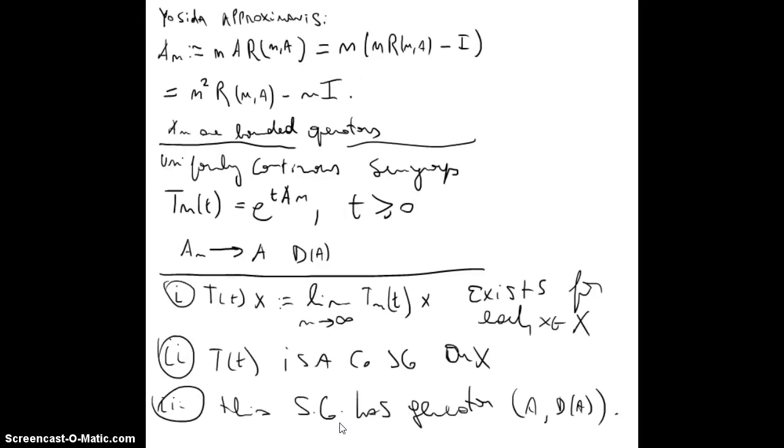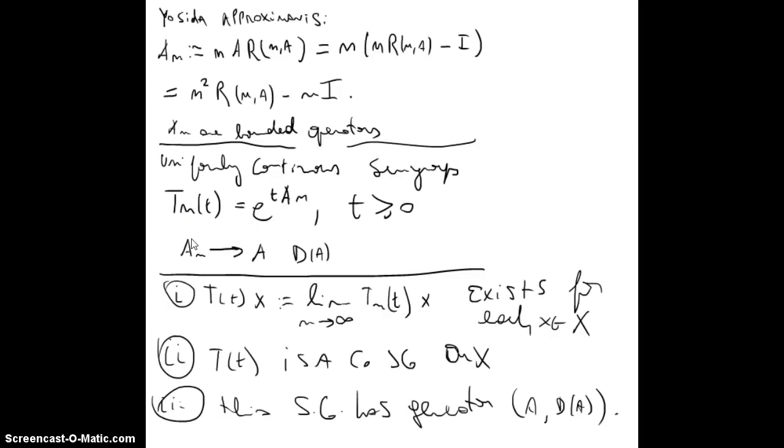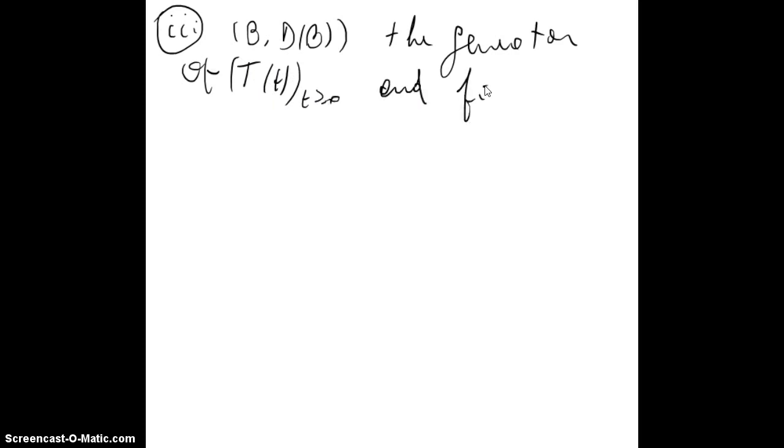The third one is that the semigroup has the generator A, DA. That is to say that is the same, the generator of T_n and the one of T. Not the same, but the convergent operator. So let's call the generator B with domain DB. The generator is the generator of T(t). And we fix x in DA.